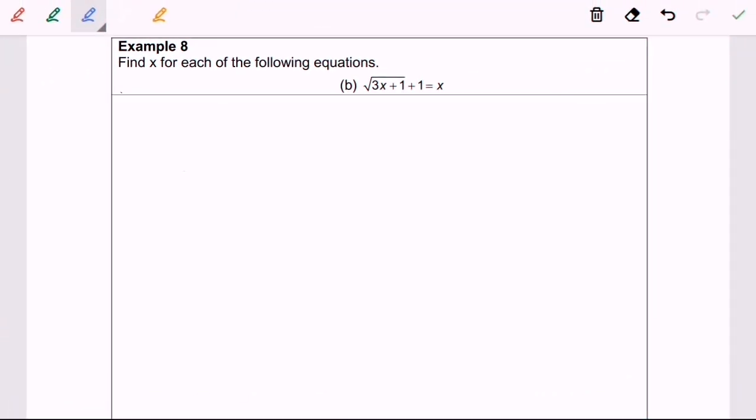Now, we're going to discuss Example 8B. Step number 1: rearrange. Square root of 3x plus 1 equals x minus 1.